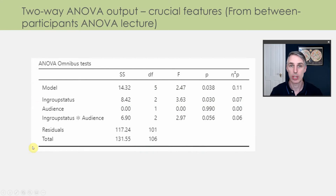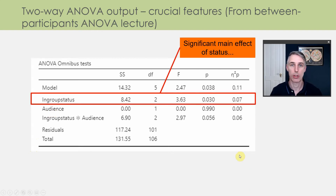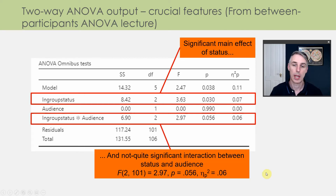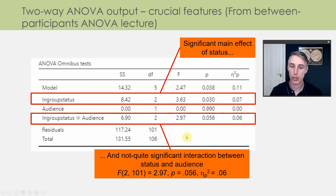This is the main ANOVA table from a two-way Between Participants ANOVA, in which we had two independent variables: in-group status and audience. We noted that we had a significant main effect of status, a non-significant main effect of audience, and also that the interaction between them was also not quite significant. This is how you would write up that particular result — the interaction — in APA format: the numerator and denominator degrees of freedom, the F-ratio, and the p-value.